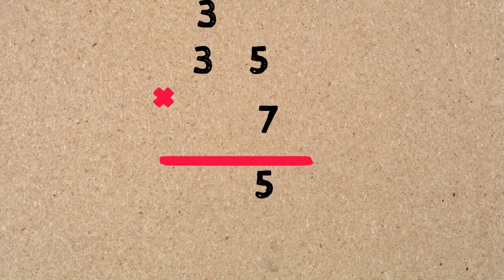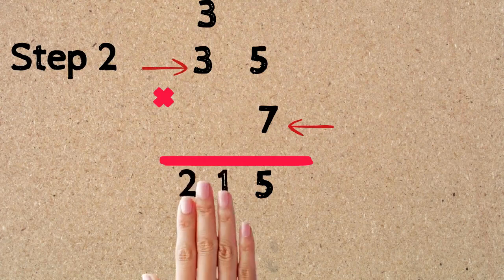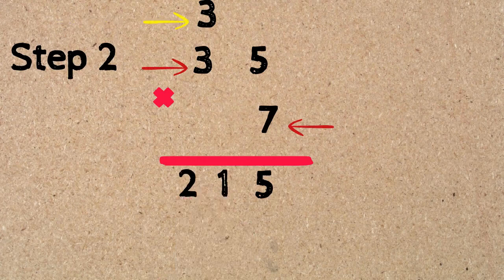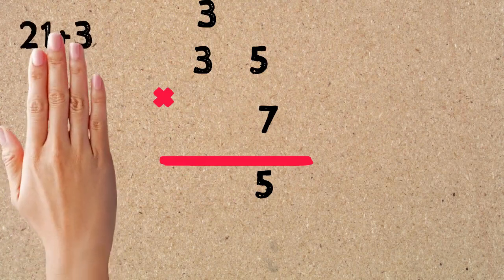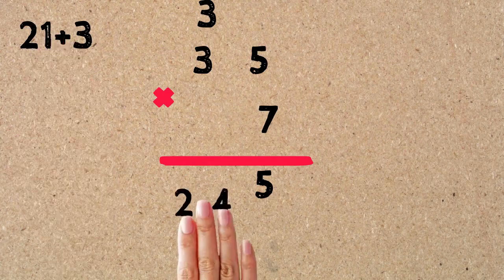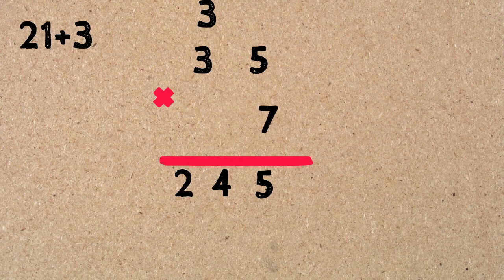We move the 3 to the top of the tens place, then move to the second step where we multiply the bottom number by the tens digit of the top number. 7 times 3 equals 21. But then we add the 3 that we already carried: 21 plus 3 equals 24. So our answer is 245.